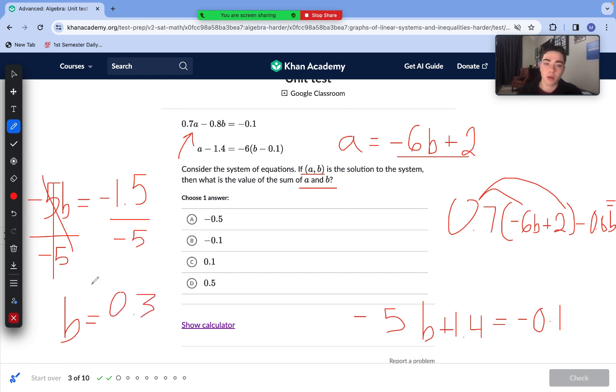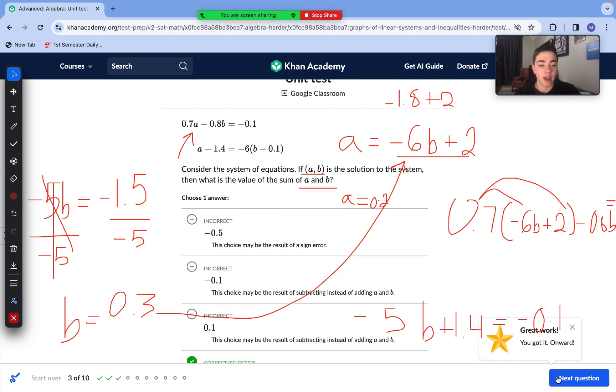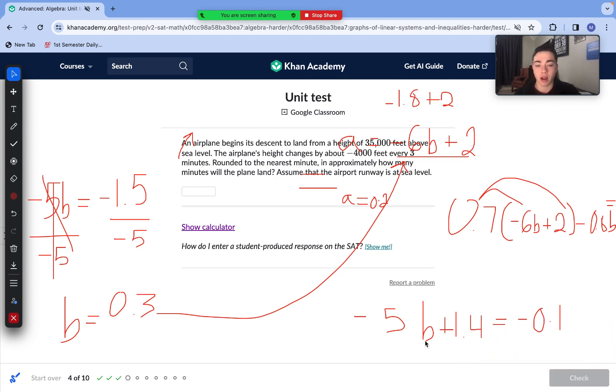So we know that our b value is equal to 0.3. Now we can substitute 0.3 into this equation to solve for our a value. 0.3 times -6 is -1.8. -1.8 plus 2 is positive 0.2. So a = 0.2. The sum of 0.2 and 0.3 is positive 0.5. Answer choice D is the correct answer.